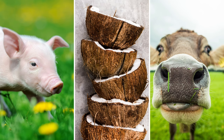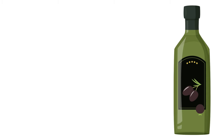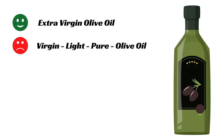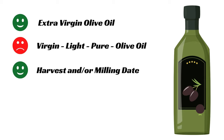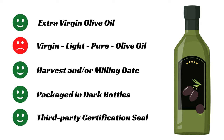Always carefully check food packaging for key information. For extra virgin olive oil, look for the phrase 'extra virgin olive oil' on the label and ignore words like virgin, light, or pure. Also check for the harvest or milling date, since extra virgin olive oil is best used within 18 months from harvest, and only consider products packaged in dark bottles.